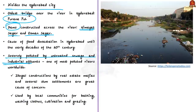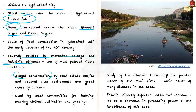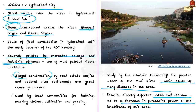Until the early decades of the 20th century, the Musi River caused flood devastation in Hyderabad. Today, untreated sewage and industrial effluents flow into the river, causing severe pollution — according to some sources it is one of the most polluted rivers worldwide. Illegal constructions by real estate mafias and slum settlements along the river banks are major concerns. The riverbed is used by local communities for bathing, washing clothes, cultivation, and grazing.